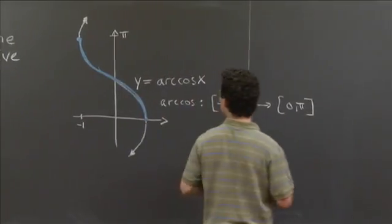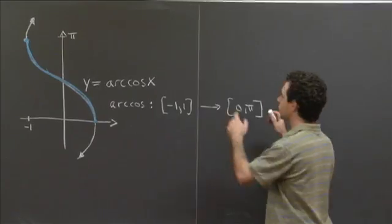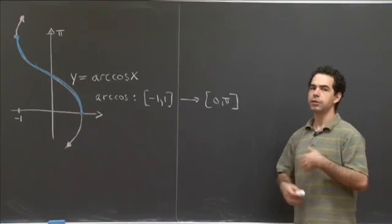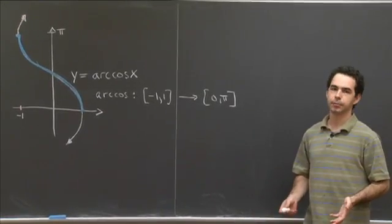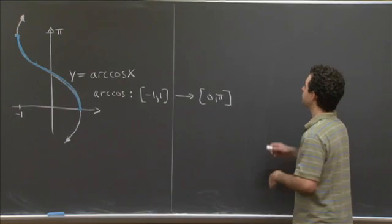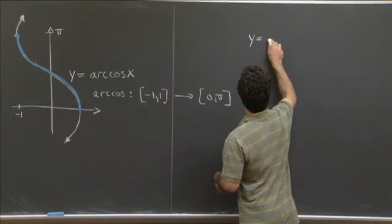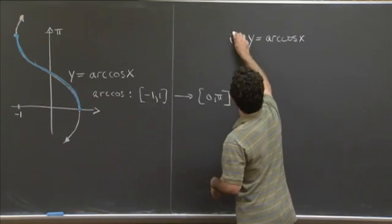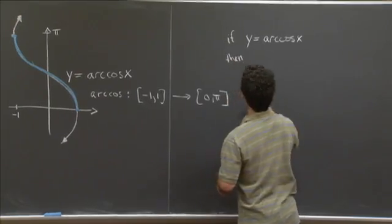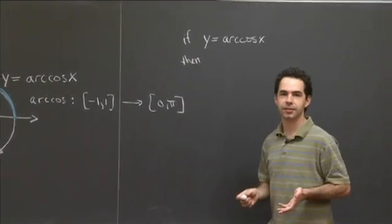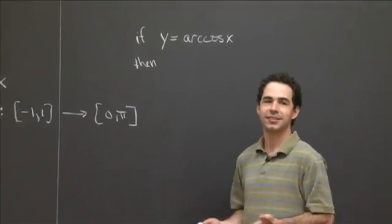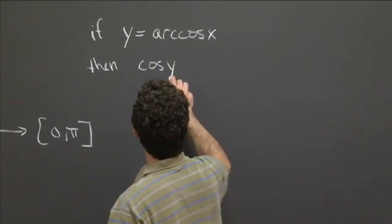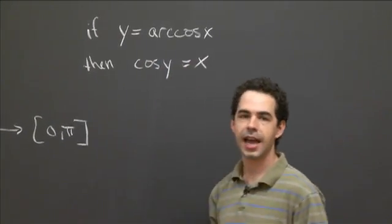So what have we got? Well, so in order to compute the derivative, this function is defined as an inverse function. So we do the same thing that we did in lecture, which is we use this trick from implicit differentiation. So in particular, we have that if y is equal to arc cosine of x, then we can take the cosine of both sides. And cosine of arc cosine, since we've chosen it as an inverse function, that just gives us back x.